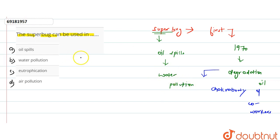If we look at the options, the first option says the superbug can be used in oil spills. This is correct, our answer may be possible.